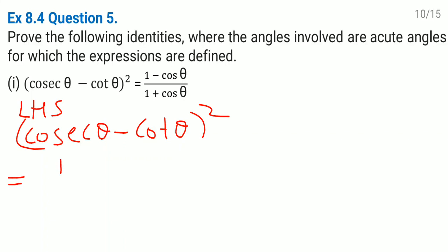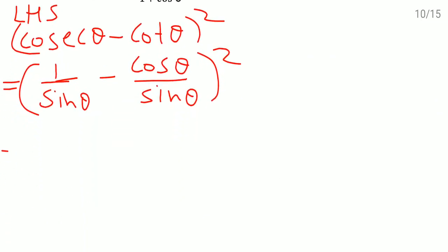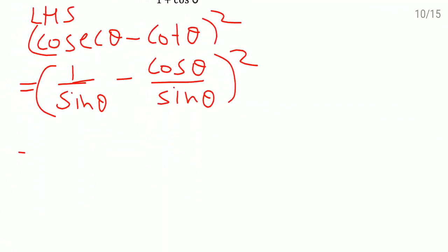So cosec means what? 1 by sine. So I'll write down here 1 by sine theta minus cot means what? cos theta by sine theta here and then the bracket square which is equal to, if you see here at both the places the denominators are same. So I'll just write down sine theta and here at the numerator place 1 minus cos theta and the bracket square. This square is applicable to the numerator as well as the denominator.